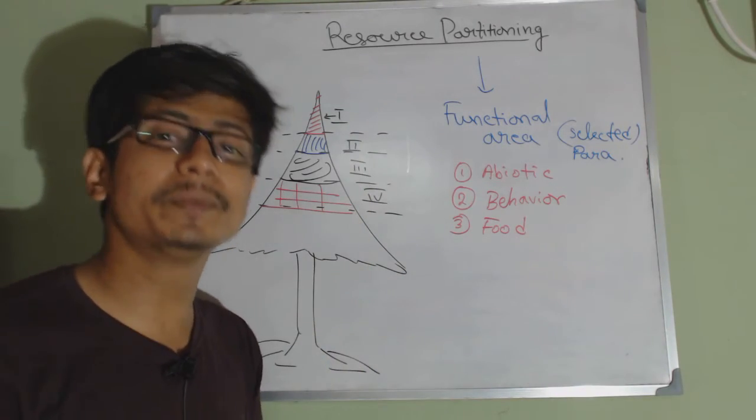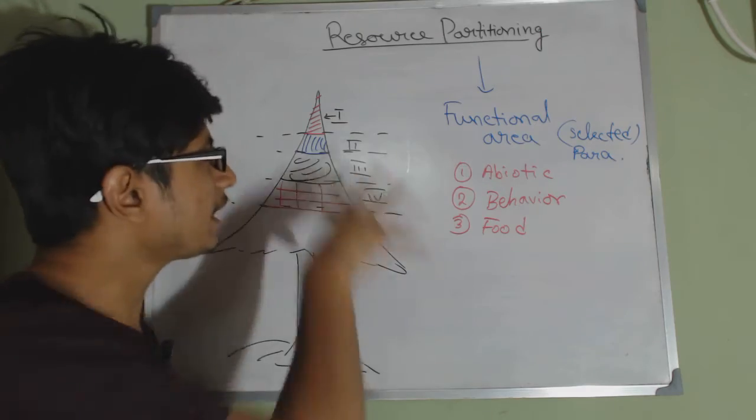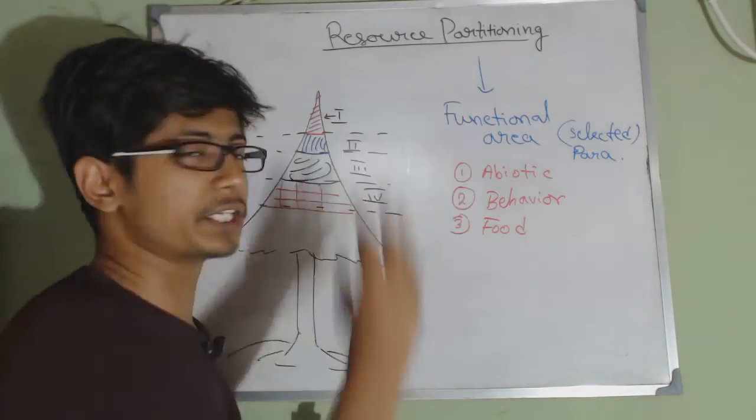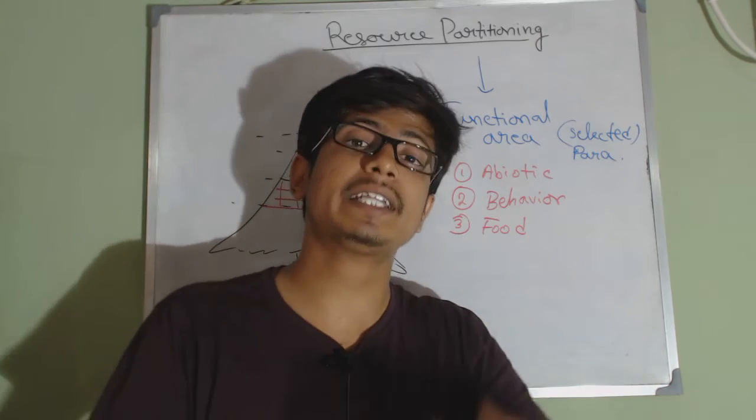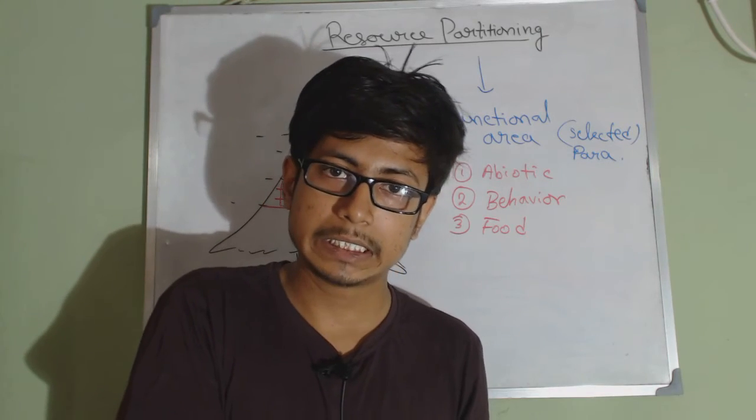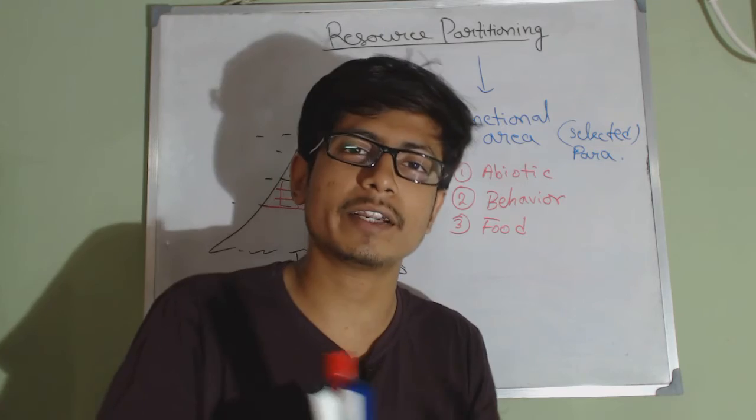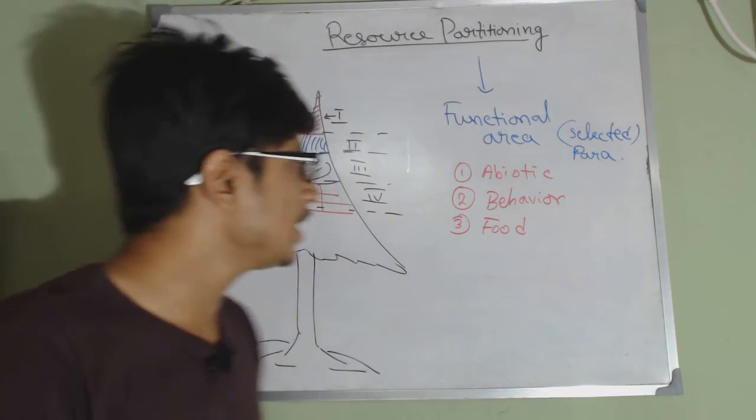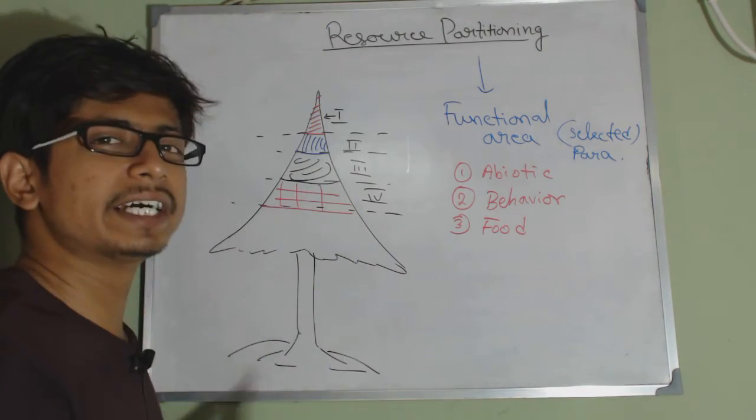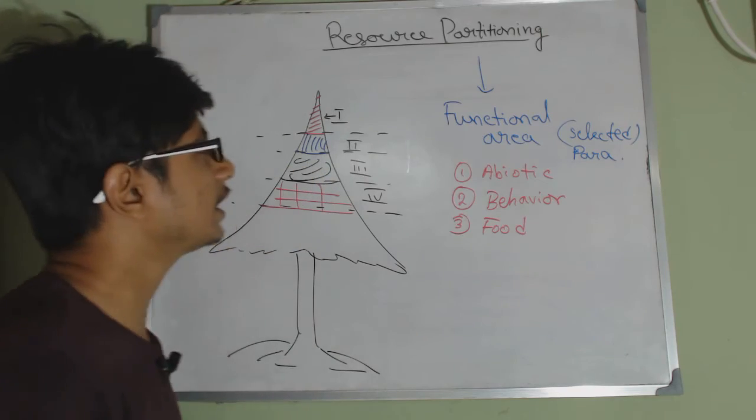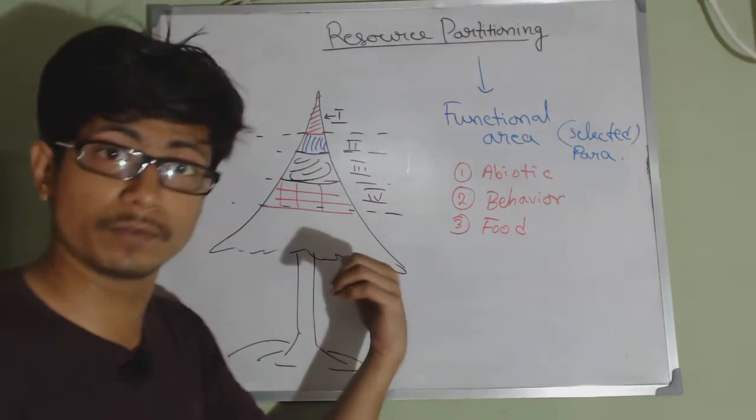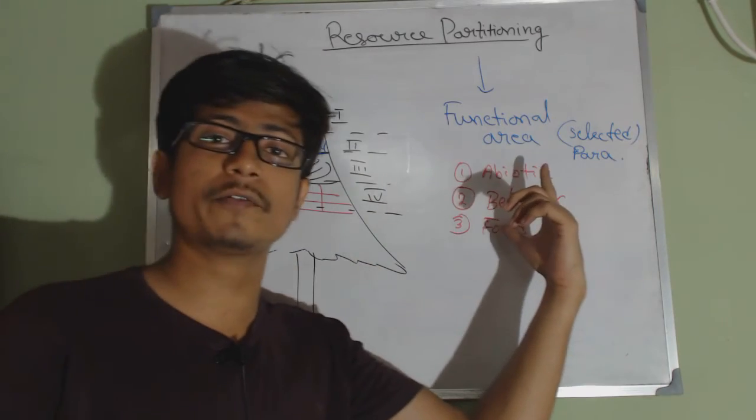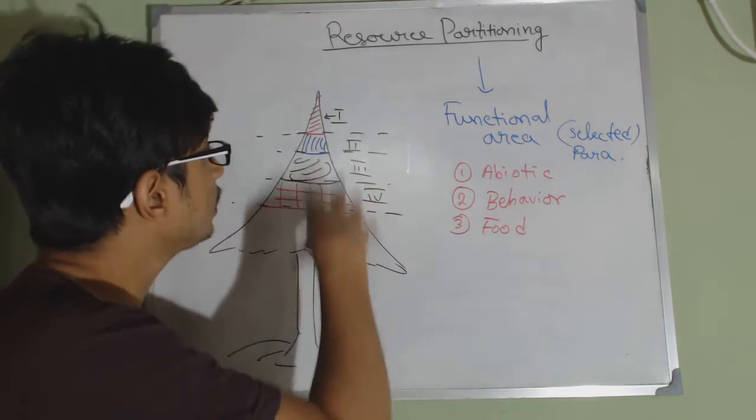This is one example of resource partitioning, where if organisms have the same niche but they still want to stay together without getting into any kind of competition or fighting, they will try to partition their habitat or partition their resource. That resource could be habitat, food source—in this case it's a food source also—and also abiotic factors.